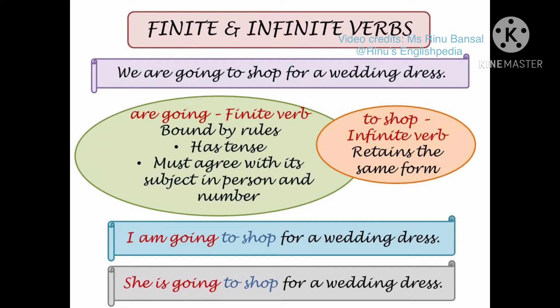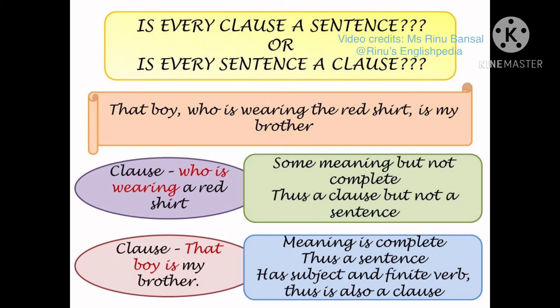For example, if we change we to I, we get: I am going to shop for a wedding dress. If we change we to she, we get: she is going to shop for a wedding dress. The helping verb changes according to the subject. However, the infinite verb to shop retains the same form — it is not bound by any rules. In all examples, to shop remains unchanged.